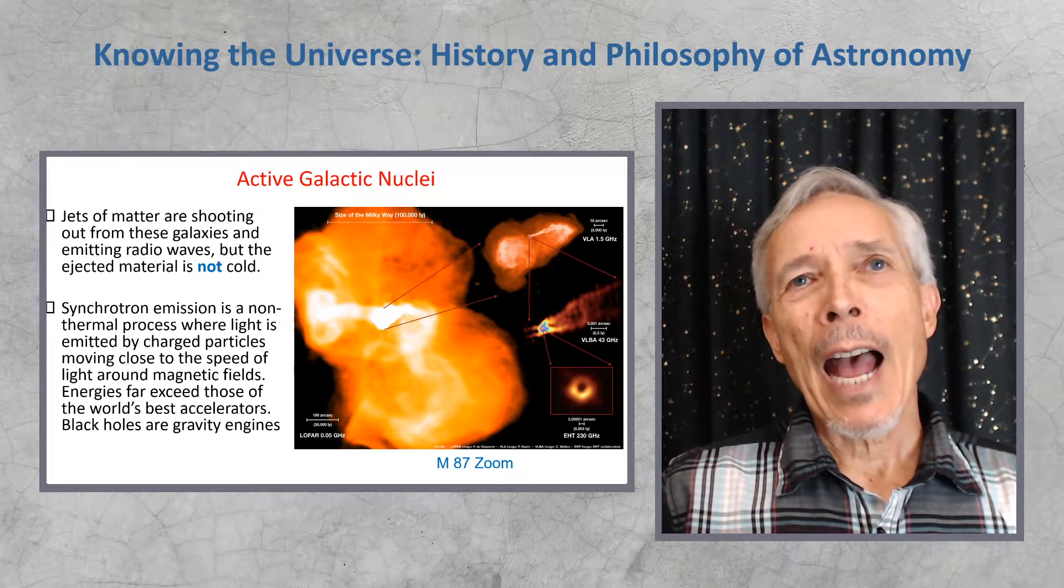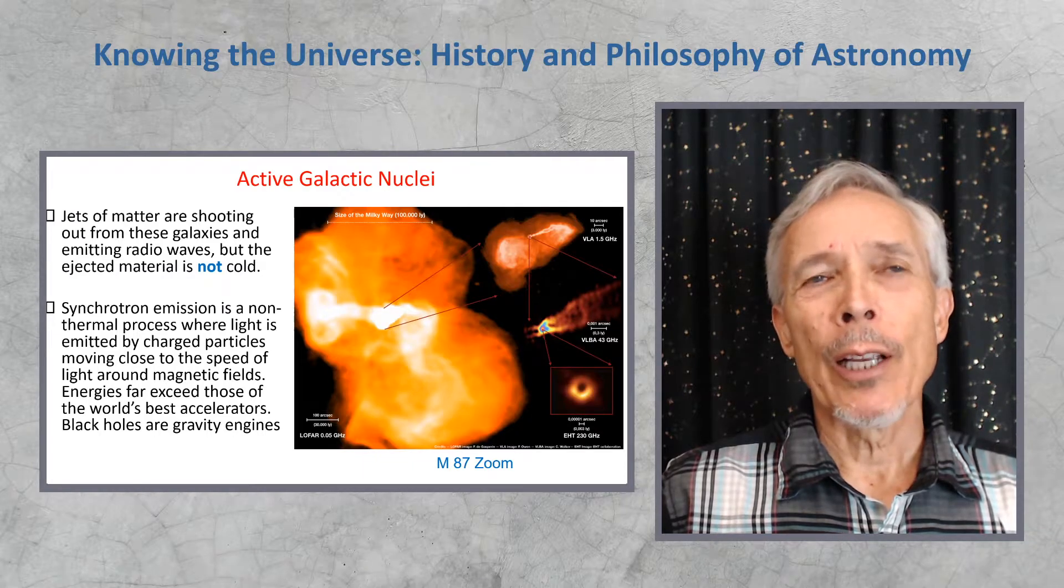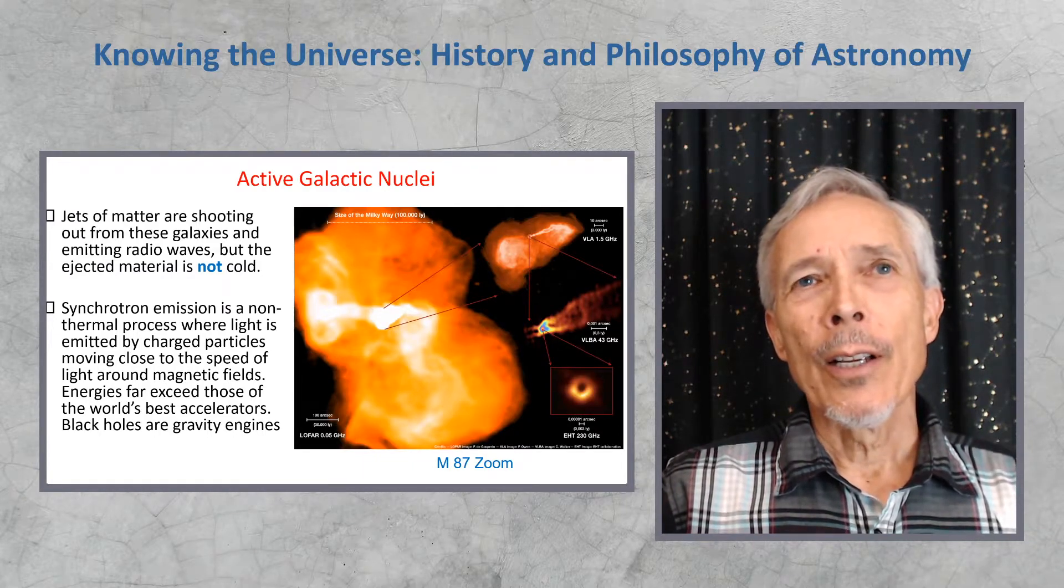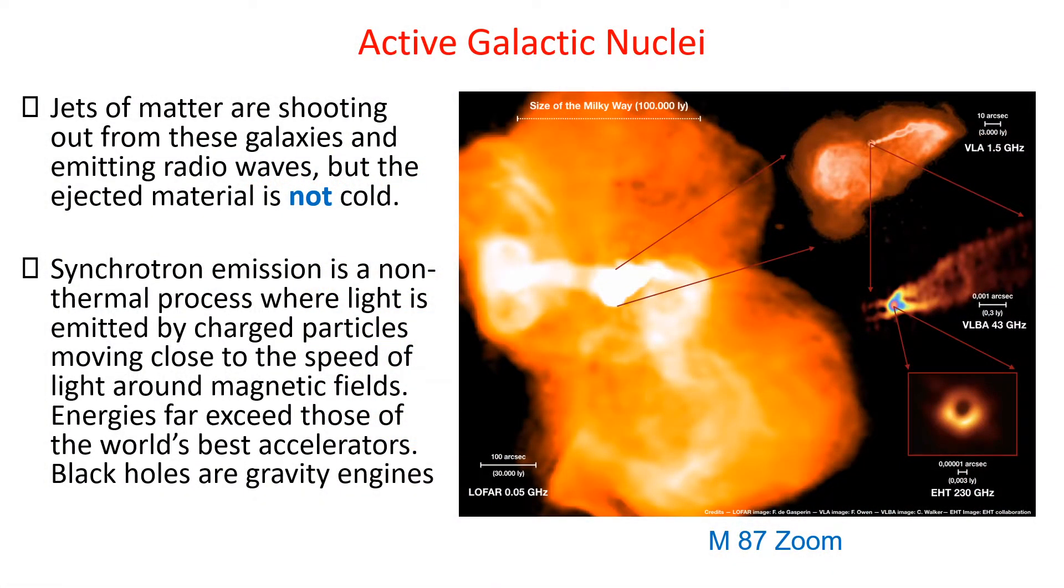So we call these active galactic nuclei. They're galaxies with very active nuclei concentrated in the center. Some of them are making jets of matter shoot out, emitting radio waves, but this ejected material is not cold, although generally it's cold material that emits radio waves.